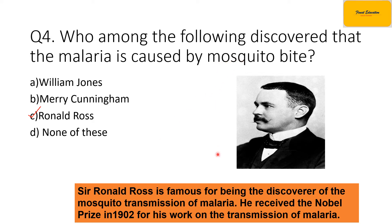Ronald Ross had a very interesting story — he used to chase mosquitoes and then cut open their stomachs to examine the inside. One day he discovered that the same bacteria found inside mosquitoes was also found in malaria patients. This proved that malaria is transmitted from one person to another through mosquito bite.